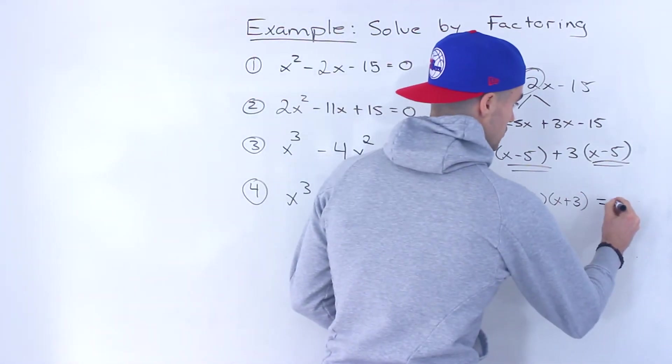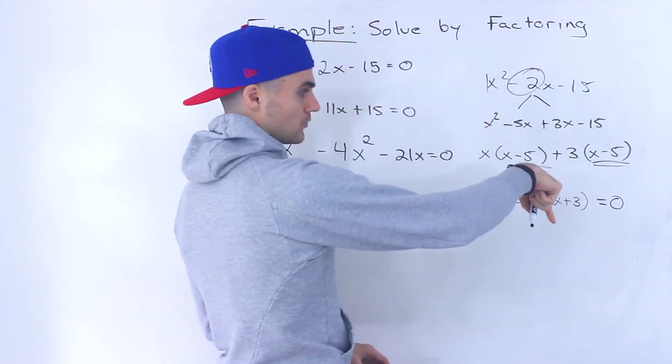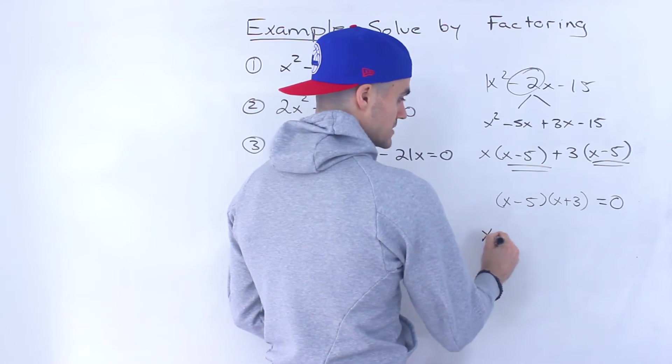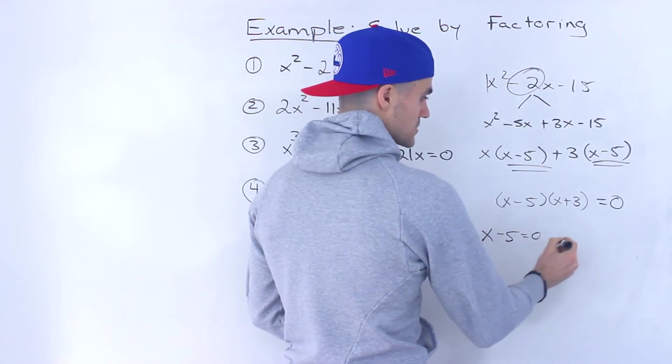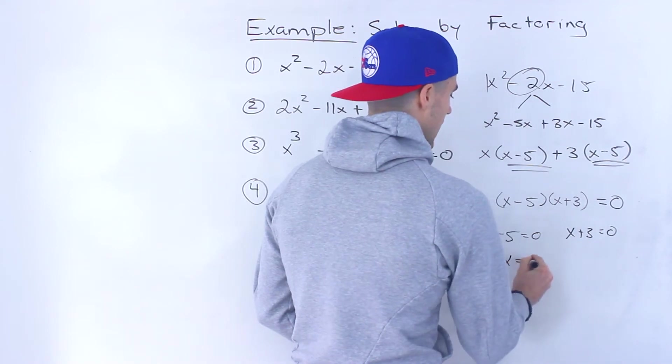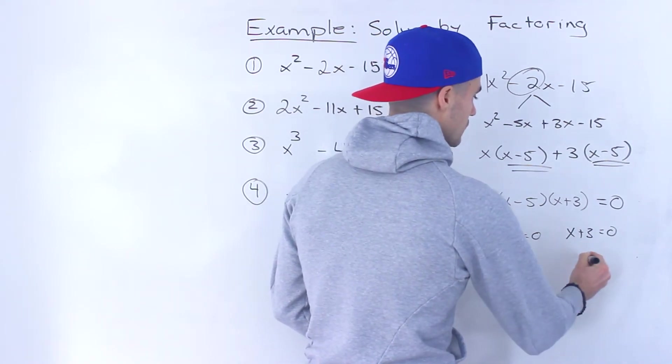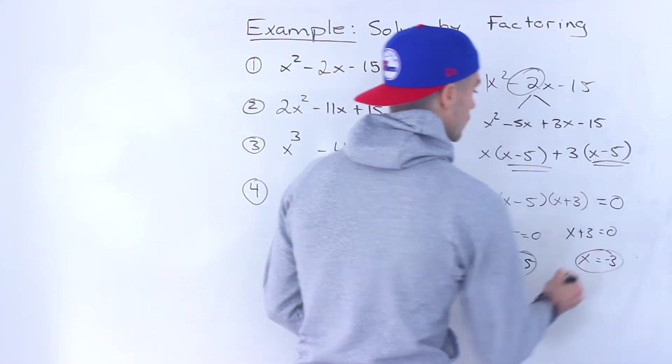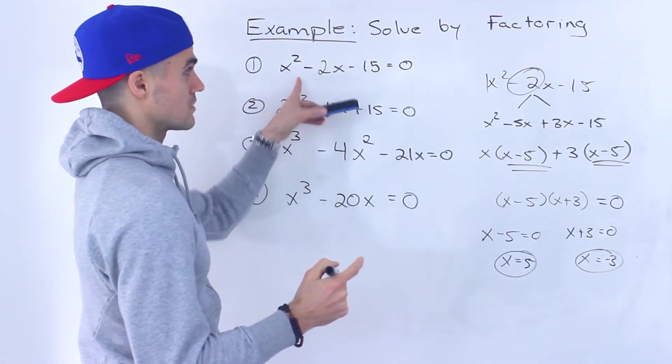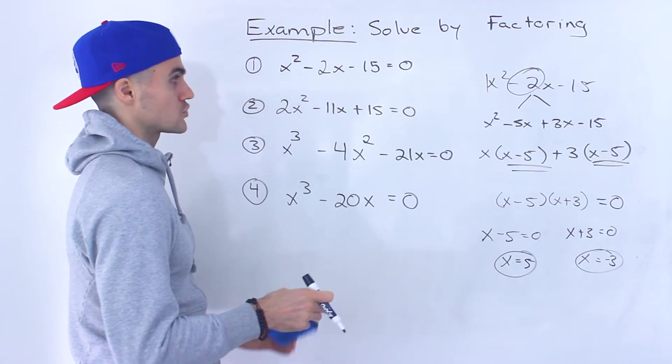Remember this is an equation, so this equals 0 the whole time. When is this going to equal 0? Well, if (x - 5) = 0 or (x + 3) = 0, it's going to happen at x = 5 or x = -3. Those are the two solutions for that first quadratic equation.